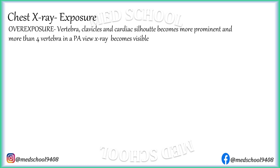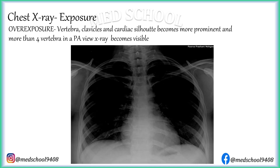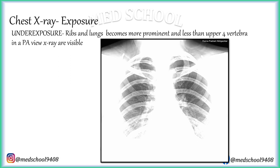Exposure of an X-ray can vary to either side — it can be overexposed or underexposed. In overexposure, the vertebrae, clavicle and cardiac silhouette become more prominent, and more than 4 vertebrae in a PA view X-ray become visible. In underexposure, ribs and lungs become more prominent and fewer than the upper 4 vertebrae in PA view are visible. Remember that brighter-looking X-rays are in fact underexposed.